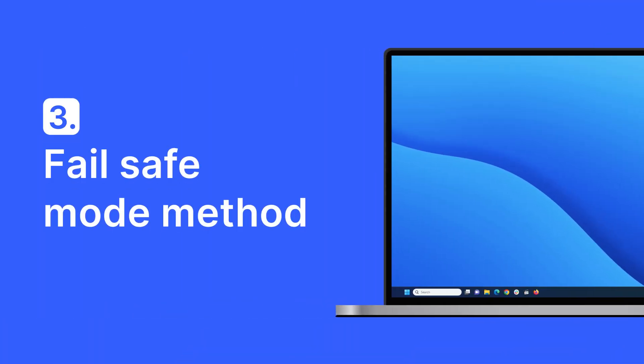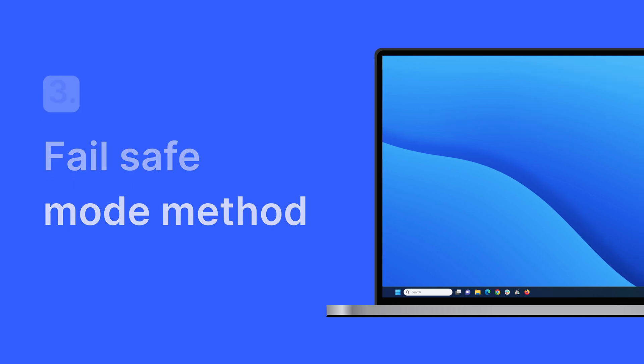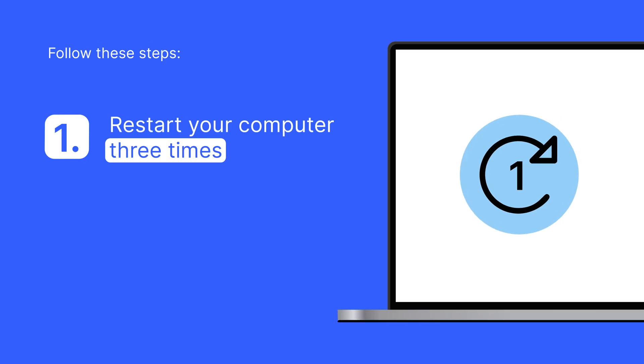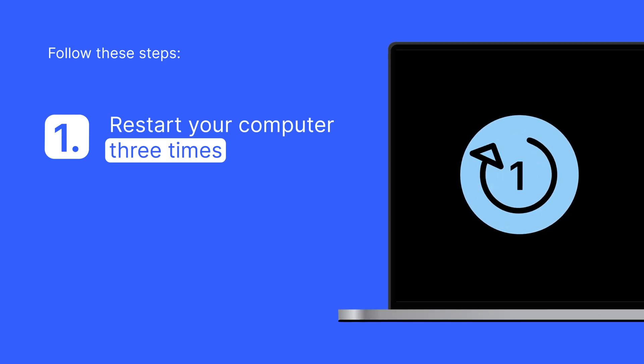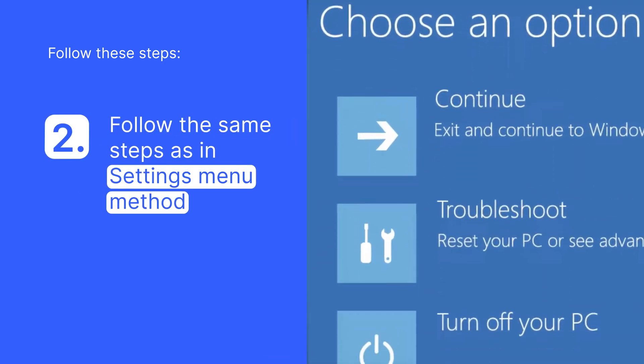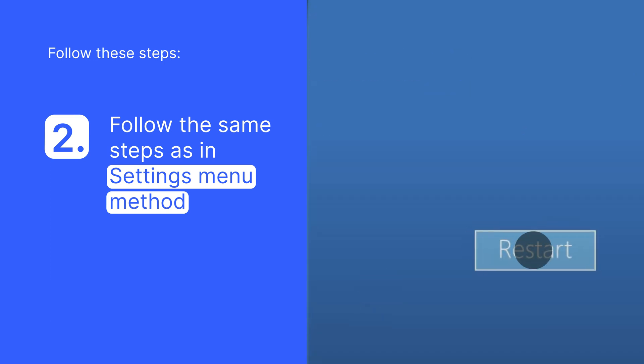The last method is the Fail Safe Mode method — a handy way to reboot your Windows 11 if you encounter a blank screen. This usually happens when you can't boot into Windows at all. All you have to do is try to start your computer twice. The third time, Windows 11 will automatically allow you to boot in Safe Mode. Then follow the steps covered in the previous method.